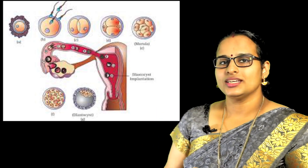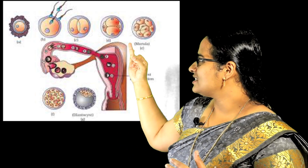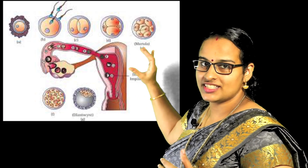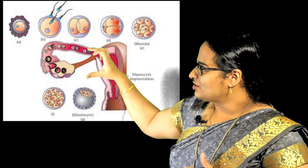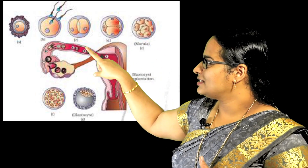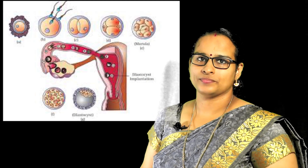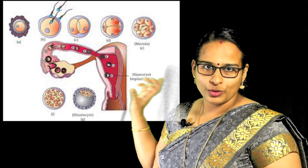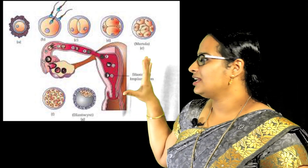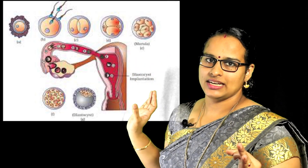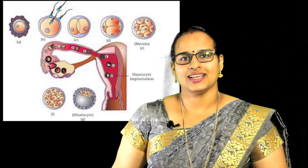That is the whole process of insemination, fertilization, and implantation we discussed in this class — three processes: first insemination, then fertilization, then implantation. This implantation starts the pregnancy period. Thank you.